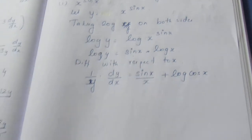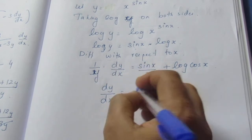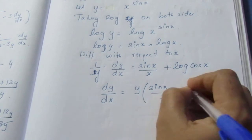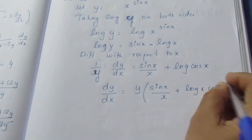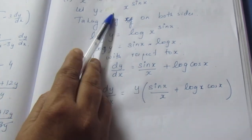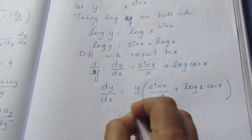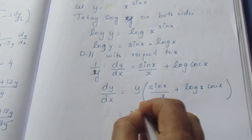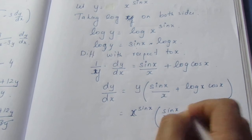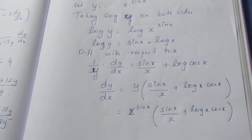Now dy by dx is equal to y multiplied by sin x by x plus log x cos x. Substituting y, dy by dx equals x power sin x into sin x by x plus log x cos x. This is the final answer.